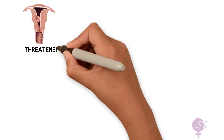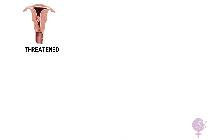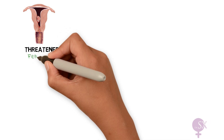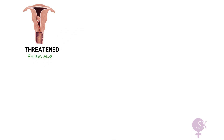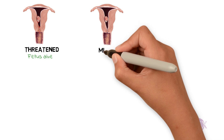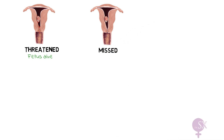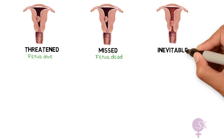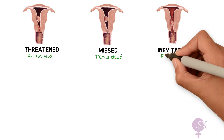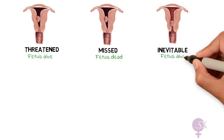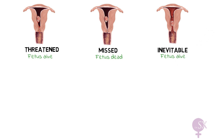A threatened miscarriage is when the patient presents with bleeding, a closed cervical os, and the fetus is still alive. It is referred to as a threatened miscarriage because there is the threat of death. A missed miscarriage is when the patient is completely asymptomatic with no bleeding, a closed cervical os, but the fetus is dead. Inevitable miscarriage is when there is bleeding PV with an open cervical os and the fetus is still alive — the miscarriage at this point is inevitable because the baby is going to die.